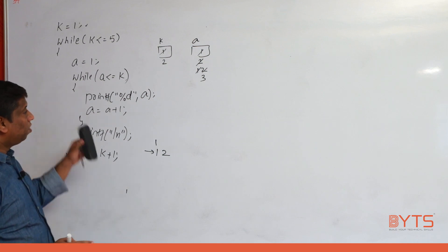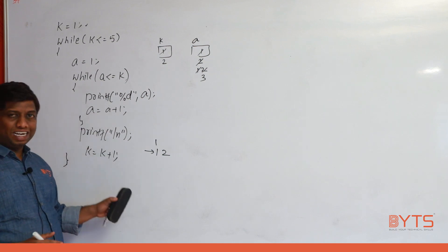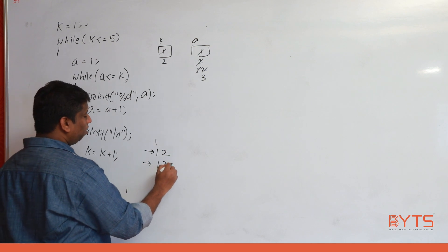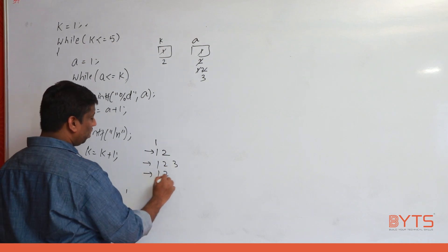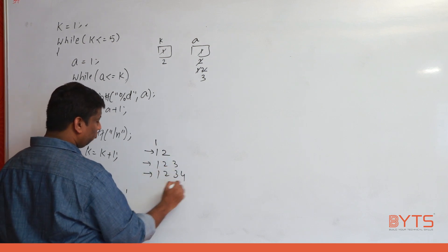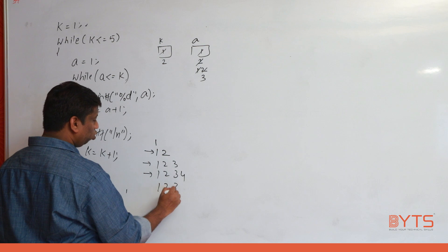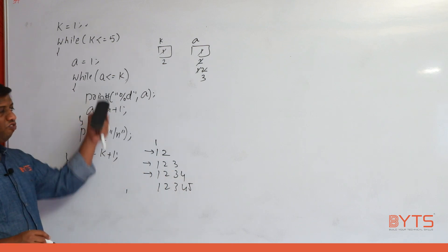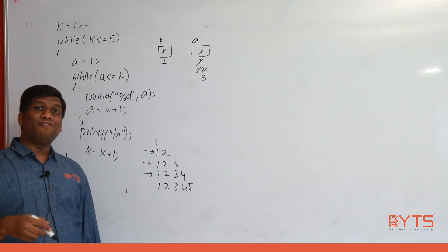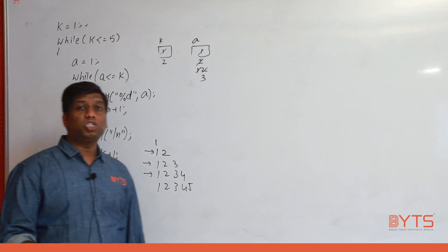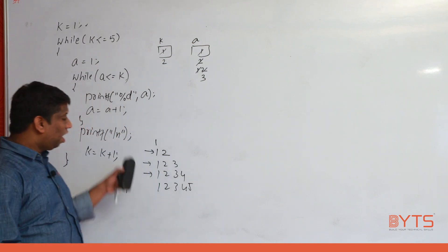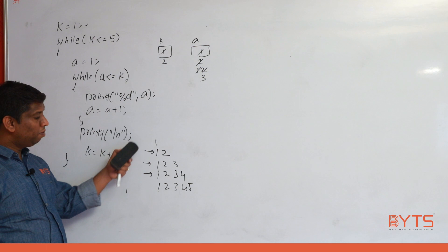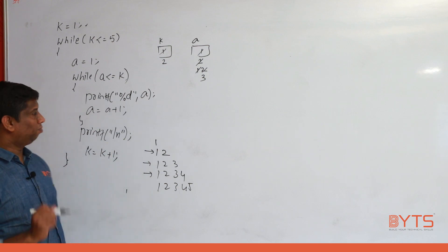First time k = 1: prints 1. Second time k = 2: prints 1, 2. Third time k = 3: prints 1, 2, 3. Fourth time k = 4: prints 1, 2, 3, 4. Fifth time k = 5: prints 1, 2, 3, 4, 5. So the inner loop repeats an uneven number of times — forming a triangular pattern.